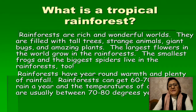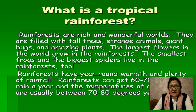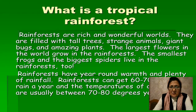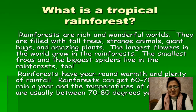What is a tropical rainforest? Rainforests are rich and wonderful worlds. They are filled with tall trees, strange animals, giant bugs, and amazing plants. The largest flowers in the world grow in the rainforests. The smallest frogs and the biggest spiders live there too. Rainforests have year-round warmth and plenty of rain — they can get 60 to 70 inches of rain a year, and temperatures are usually between 70 and 80 degrees year-round.